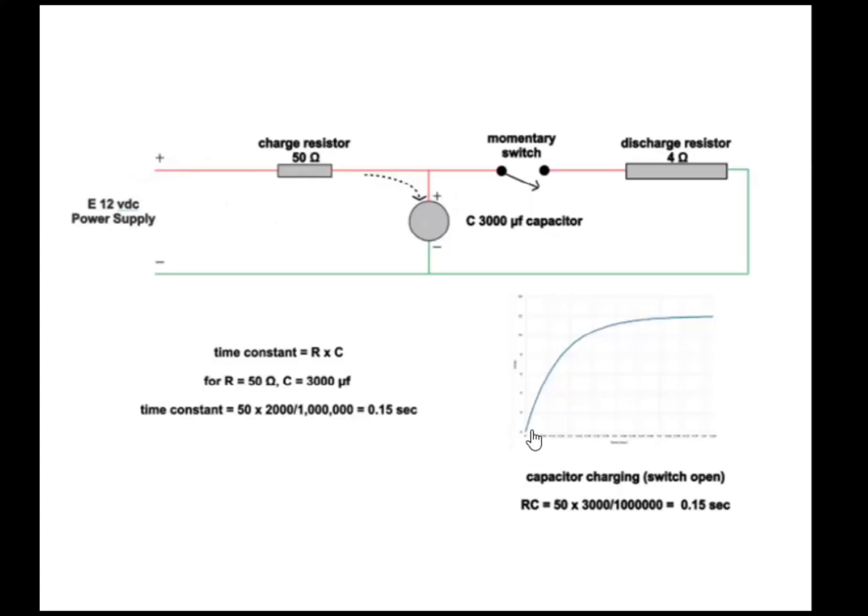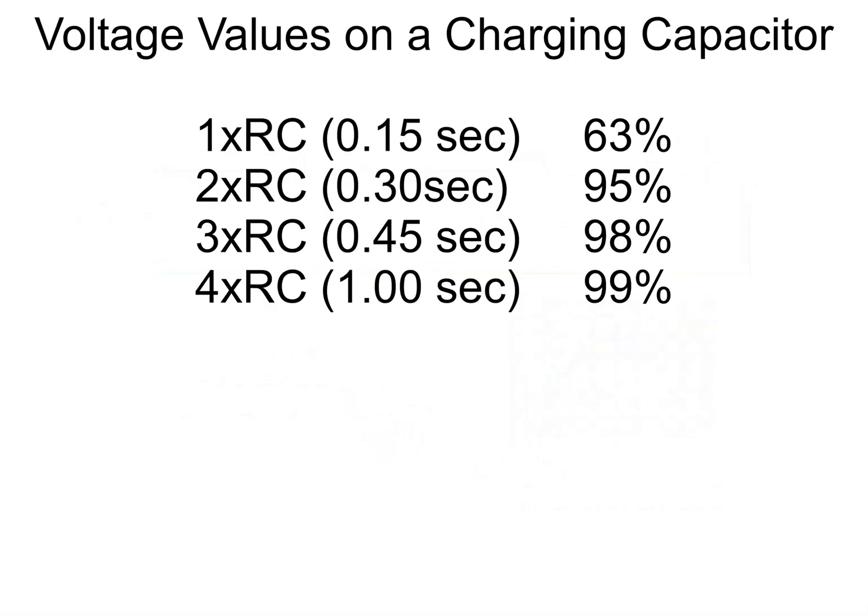The voltage rises with time according to this graph. The time constant is the product of the resistance times the capacitance, which in our case works out to 0.15 seconds. This is how the voltage varies with time for our example. In one time constant, 0.15 seconds, it goes to 63 percent of the final value. At two time constants it's 95 percent. At three it's 98 percent, and at four time constants or about a second it's up to 99 percent.